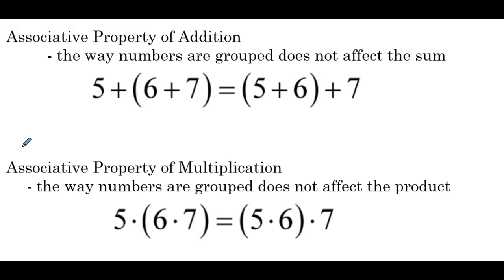So the associative property is all about how we group terms in addition or in multiplication. A good way to think of this: who we associate with is our group of friends — associative grouping. And if we change the way we group, it does not affect the sum or the product.